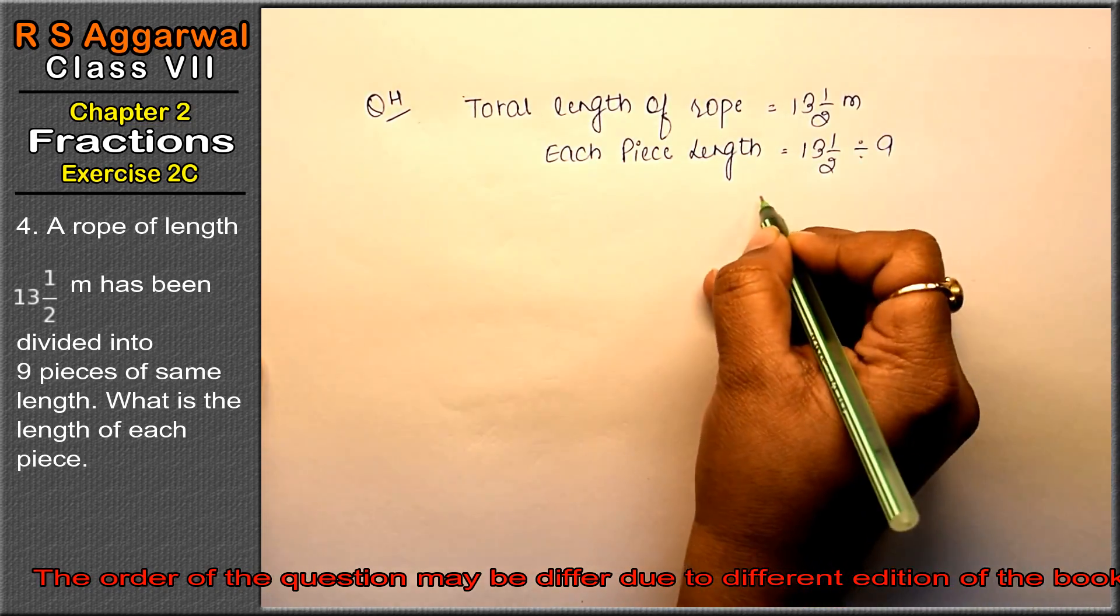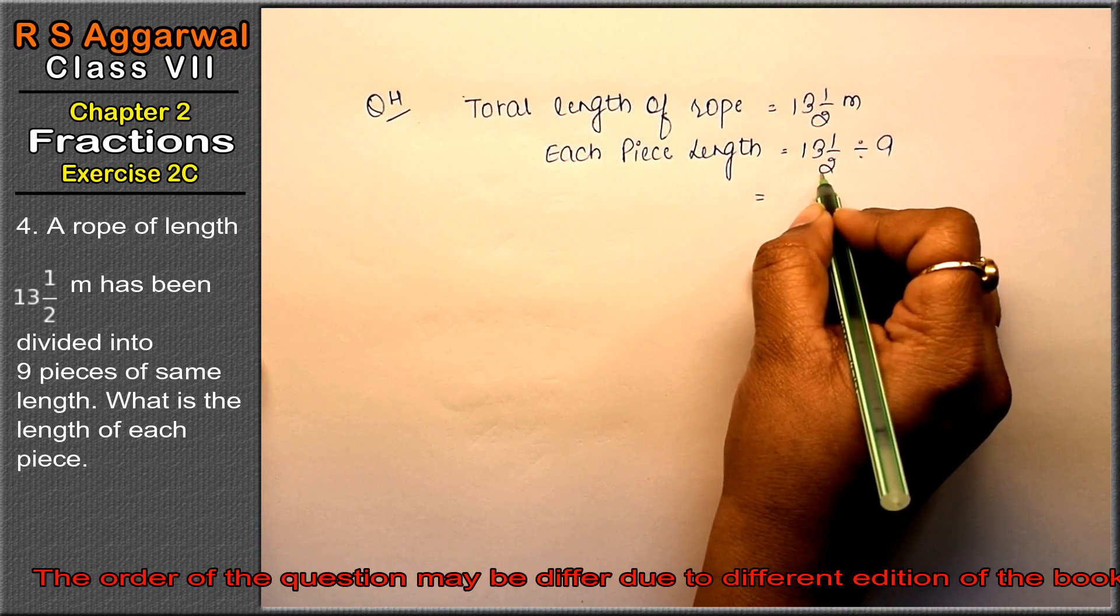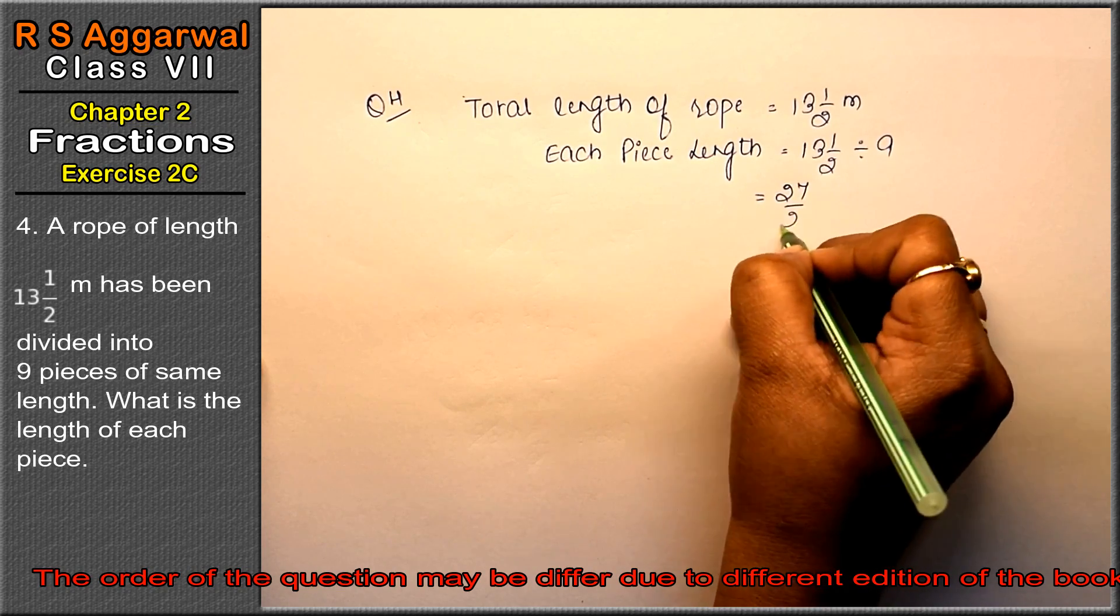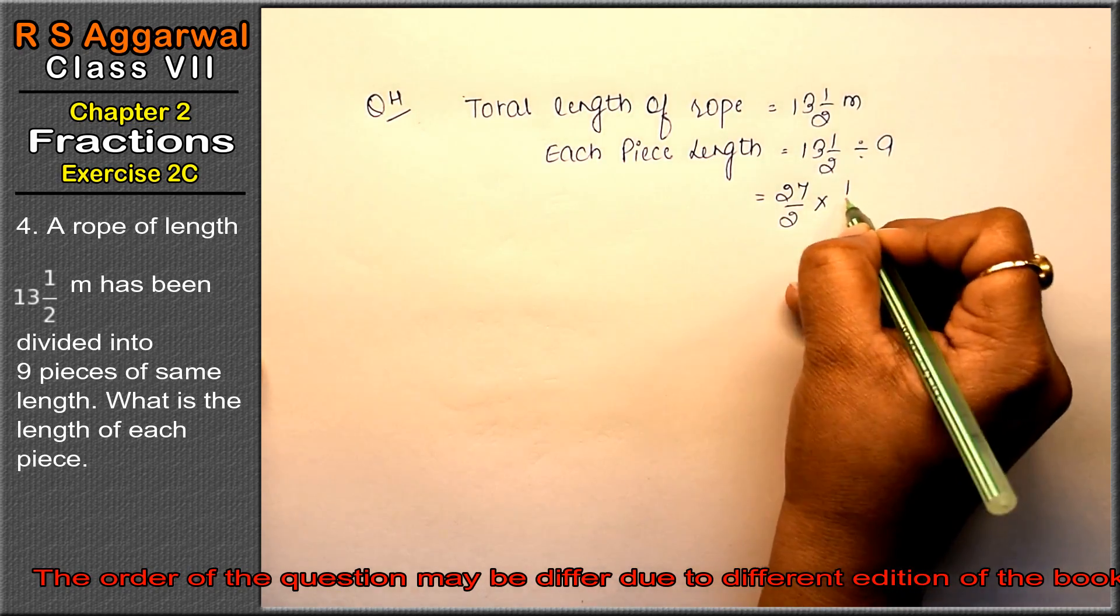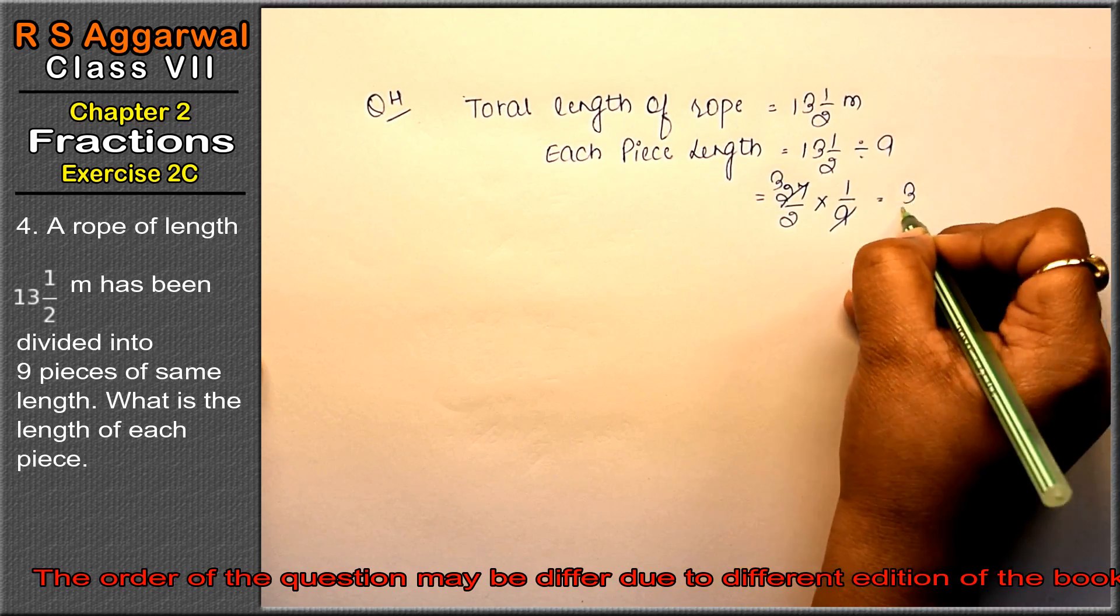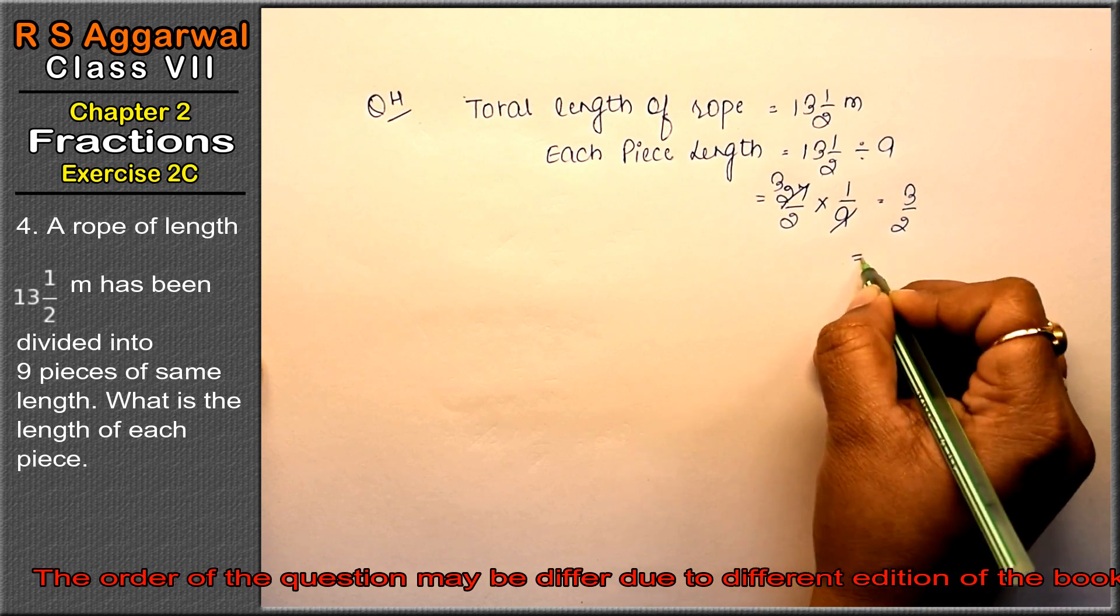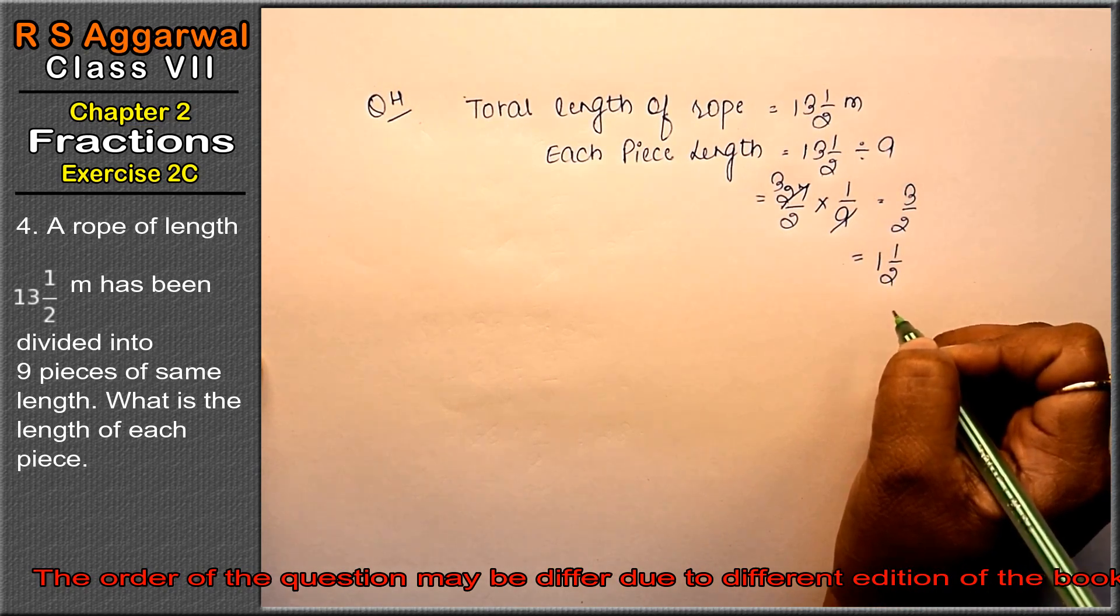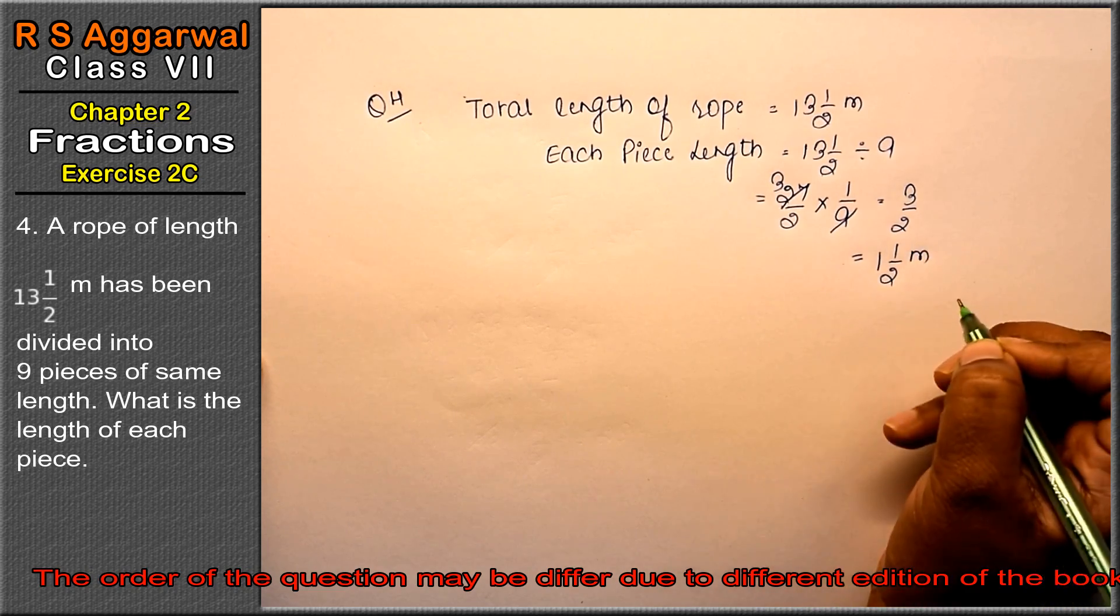Right, friends? So now we convert the mixed fraction. 13 times 2 is 26 plus 1 is 27/2 multiplied by 1/9. 9 times 3 is 27. That means 3/2, or we can say 1 whole 1/2 is the answer. 1.5 meters is the answer.